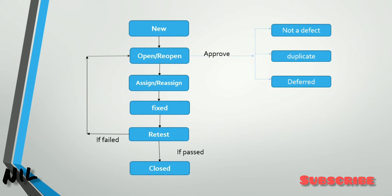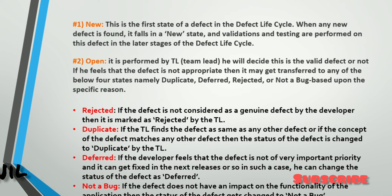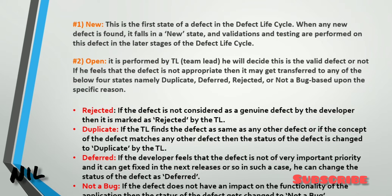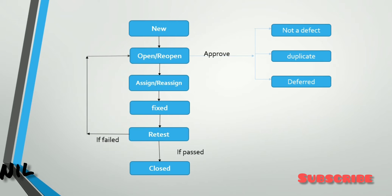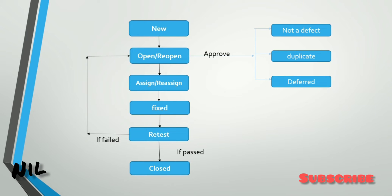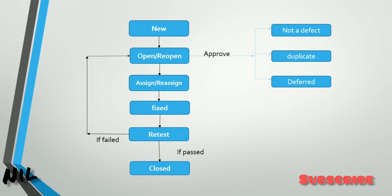Now let's look at the Open and Reopen stages. This is performed by the Team Lead. The Team Lead will decide whether the defect is deferred or not. If the Team Lead feels that the defect is not appropriate, then the defect may get transferred to one of the other stages. He will approve the defect, reject it, mark it as duplicate, or defer it.